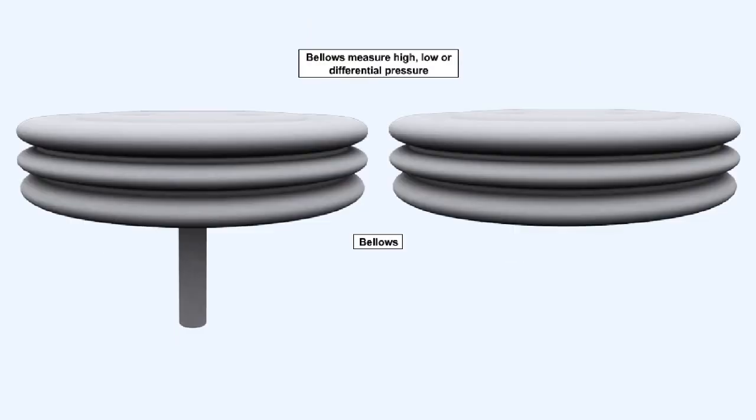The bellows element can be considered as an extension of the corrugated diaphragm principle. It may be used for high, low, or differential pressure measurement. Typically the bellows element is used to measure pressures like the output of an aircraft low pressure fuel booster pump.